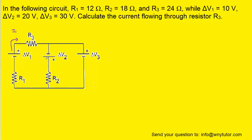Over here we have another battery; we can draw a current exiting the positive terminal and label it I2. And then we can draw a current I3 traveling in this fashion. Now it may be possible that we're choosing the wrong directions for the currents, and if that's the case we can go back at the end of the problem and fix it. For now we'll assume these directions are correct.